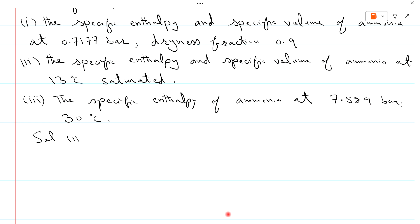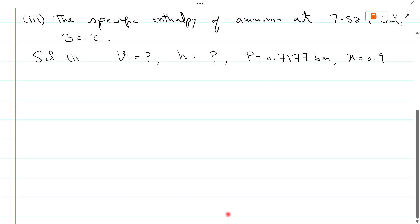For part 1, specific enthalpy and specific volume are required. The pressure is 0.7177 bar and the dryness fraction x equals 0.9. Since the dryness fraction is given, it means the properties are in the wet region.